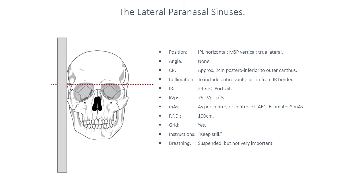The centering point for a lateral paranasal sinus tends to be just behind the outer canthus of the eye, about two centimetres posterior to it. This position can be difficult particularly for broad-shouldered patients, so it's very important to look directly at the patient's eyes to confirm a true lateral position. Suspended breathing on expiration allows the shoulders to drop a little tighter, and a 24 by 30 portrait image receptor is all that is needed.